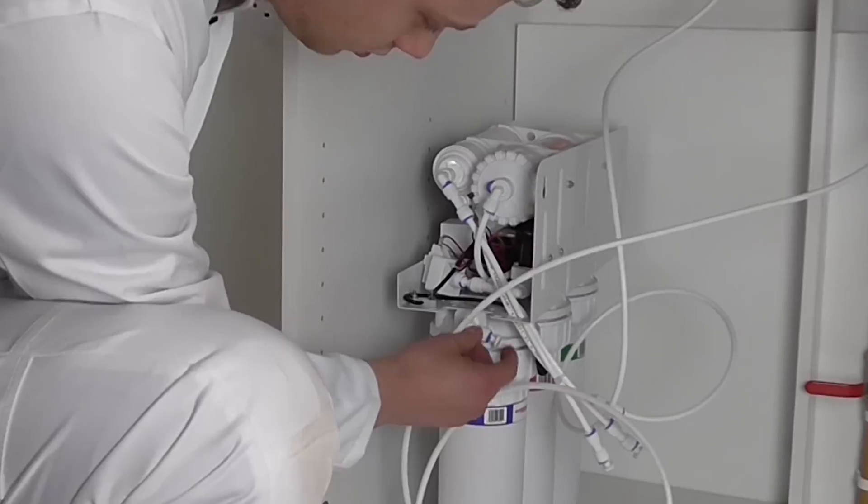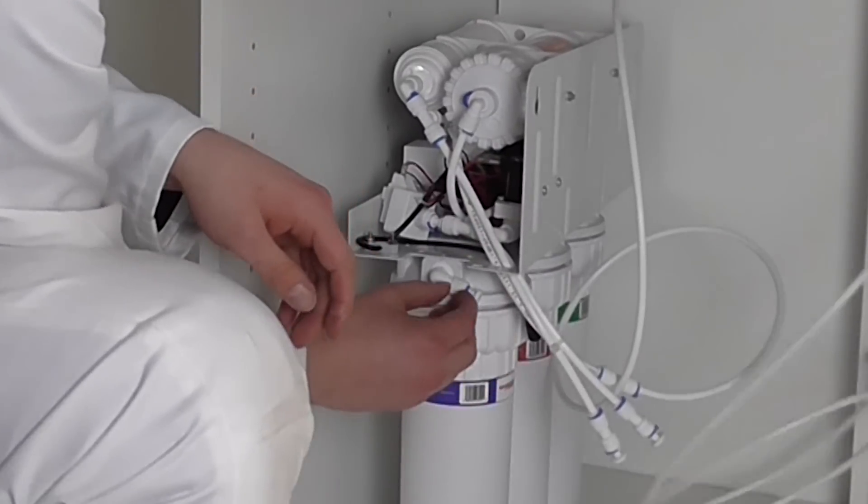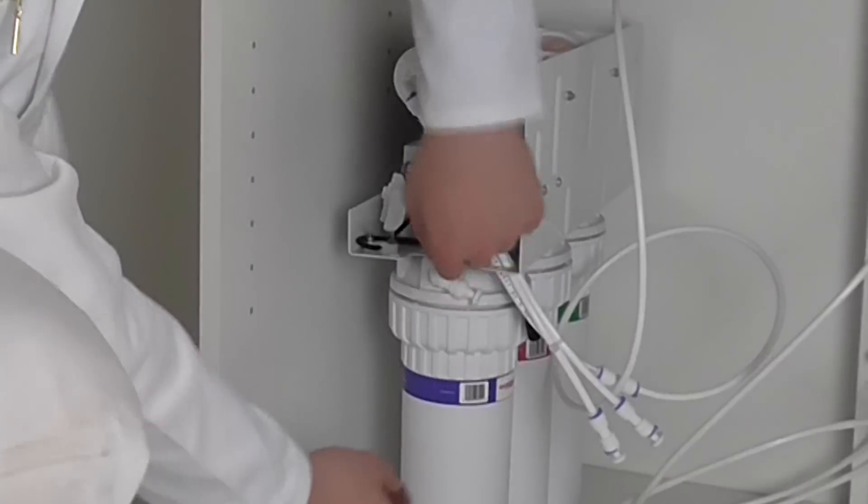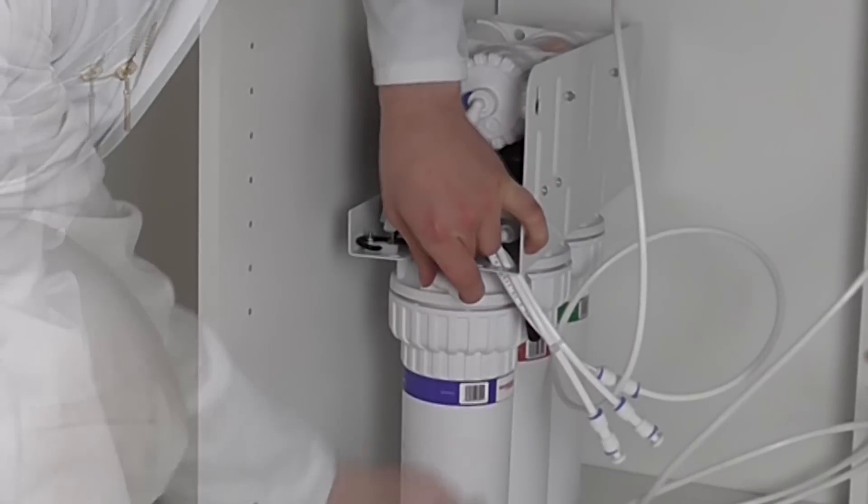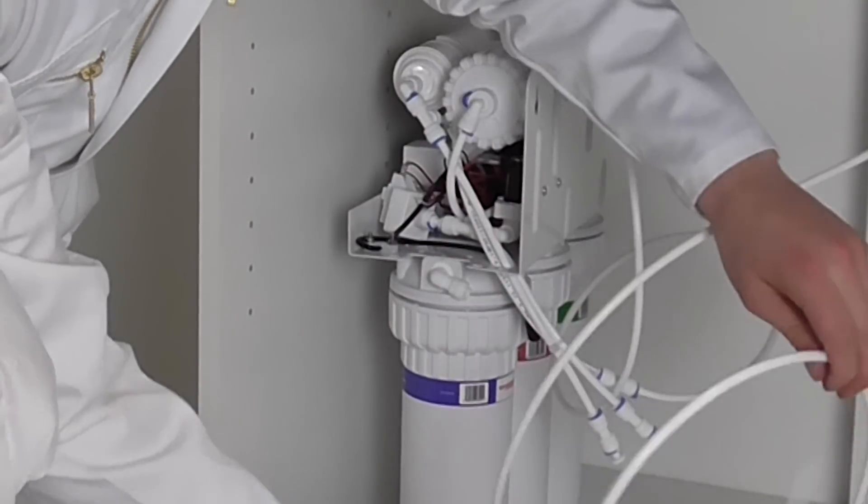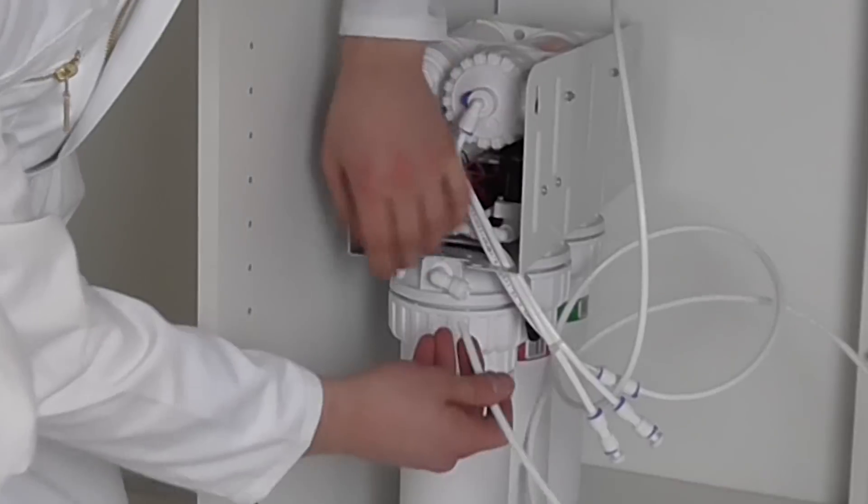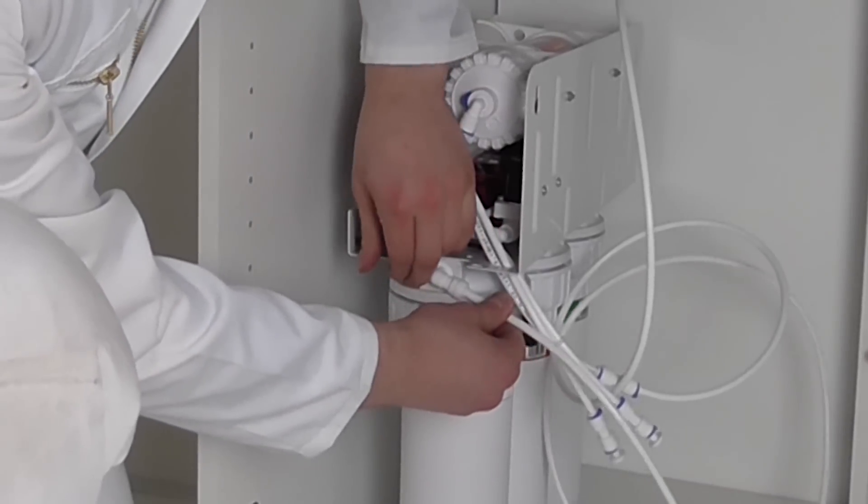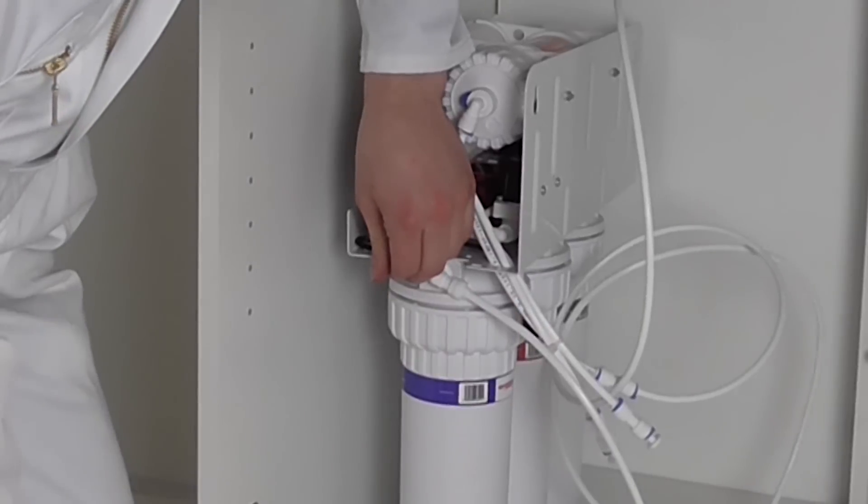Locate the inlet water connection on the unit, color-coded red. Remove the cap and connect the tubing. Secure with a blue clip.